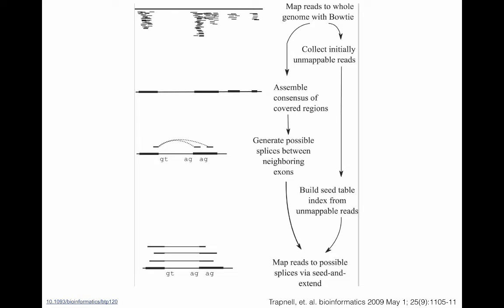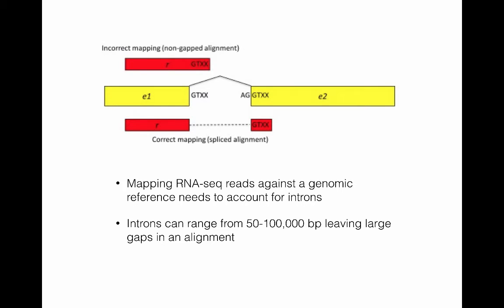Alignment programs like TopHat must account for this, and I'm showing a schematic here from the TopHat paper that shows how they attempt to deal with this problem. Initially, they map the reads to the whole genome with an aligner like Bowtie, and then they collect the unmappable reads — those that map across introns — into a separate group. Then they try to assemble a consensus of the covered regions and estimate possible splicing sites between neighboring exons, and then they try to map those unmappable reads across those splicing sites.